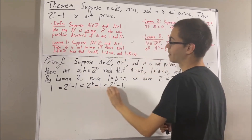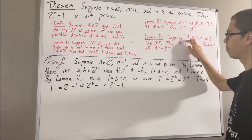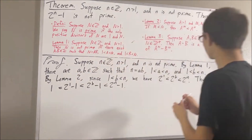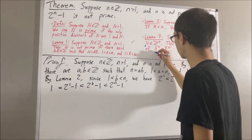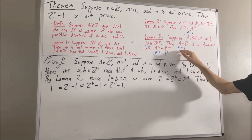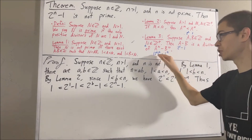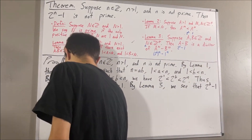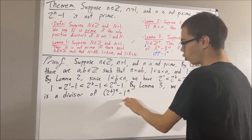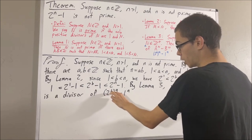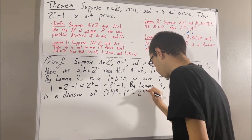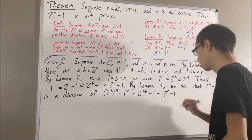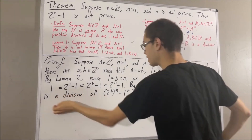To show that 2 to the power of b minus 1 is a divisor of 2 to the power of n minus 1, we apply lemma 3. Let's take capital A to be 2 to the power of b, capital B to be 1, and capital N to be a. Then we have that 2 to the power of b minus 1 is a divisor of 2 to the power of b to the power of a minus 1 to the power of a. We can simplify this: by rules for exponents, 2 to the power of b to the power of a equals 2 to the power of a times b, and 1 to the power of a equals 1. Since a times b equals n, this tells us that 2 to the power of b minus 1 is a divisor of 2 to the power of n minus 1.